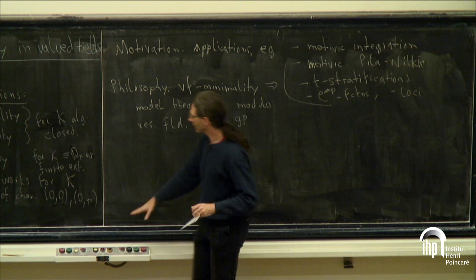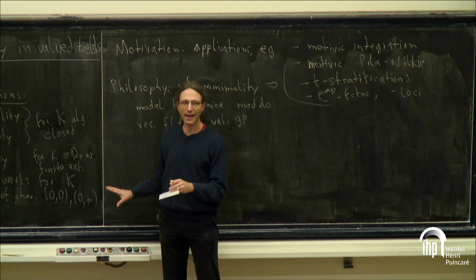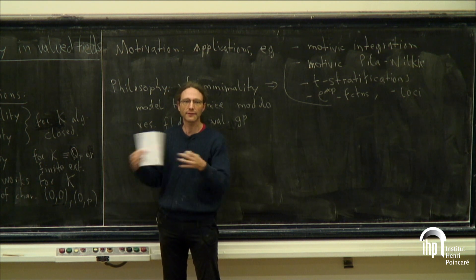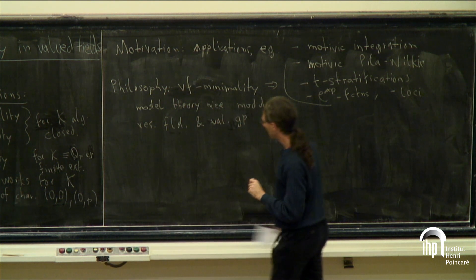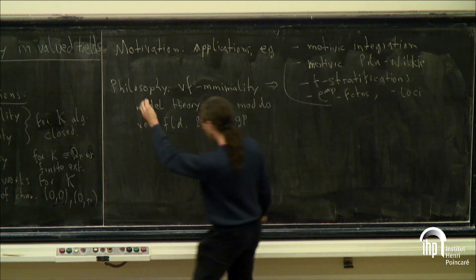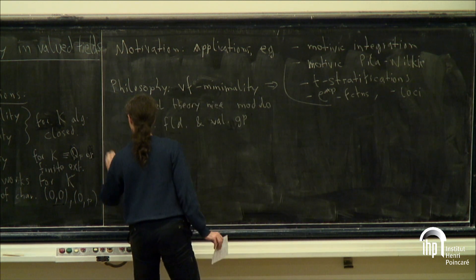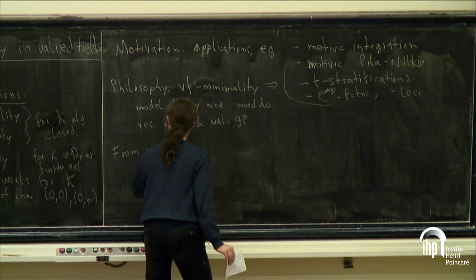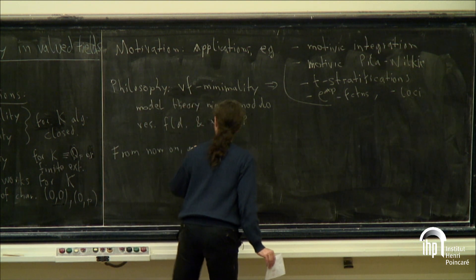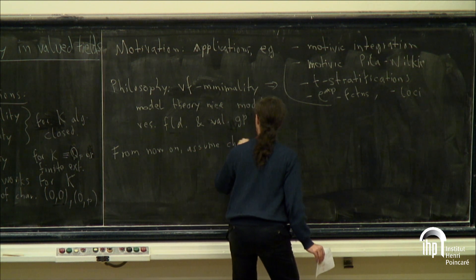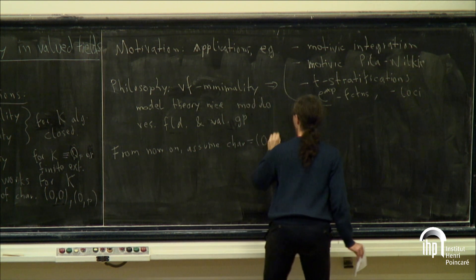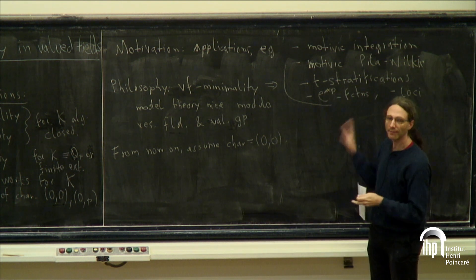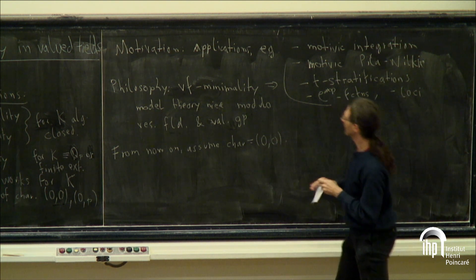For characteristic (0,p), one has to say not just modulo the residue field but some kind of residue rings — it becomes a little bit more technical. For the remainder of the talk, assume characteristic (0,0). Our notion works in mixed characteristic but it's more technical, so for this talk let me stay in this setting.